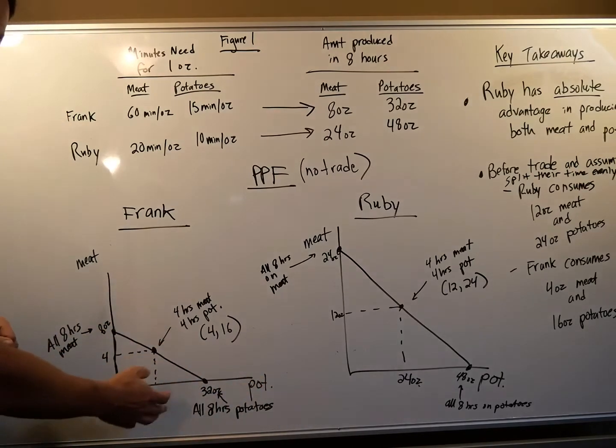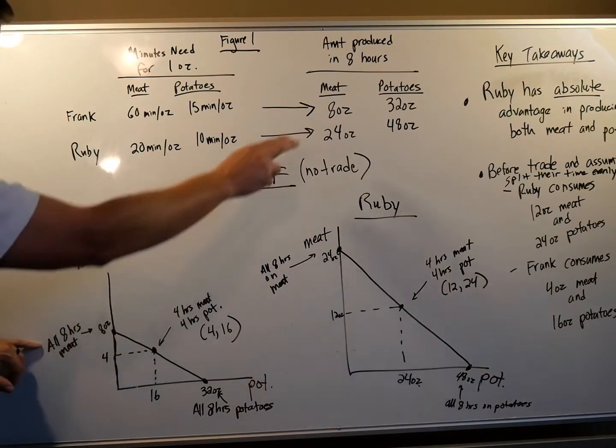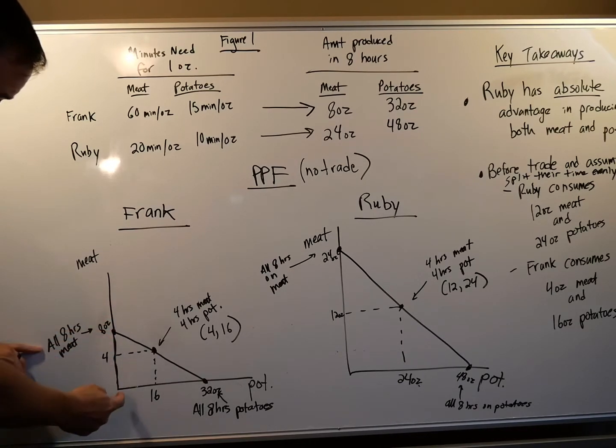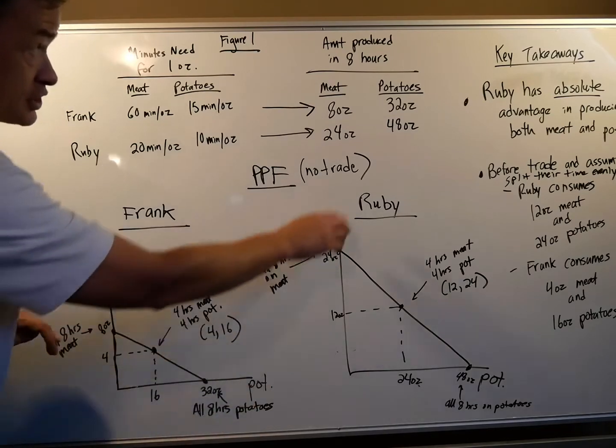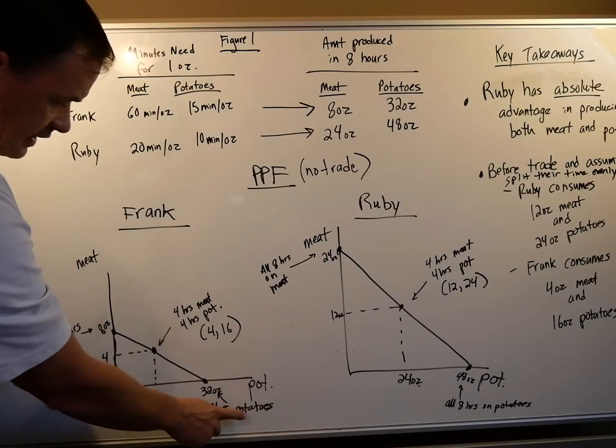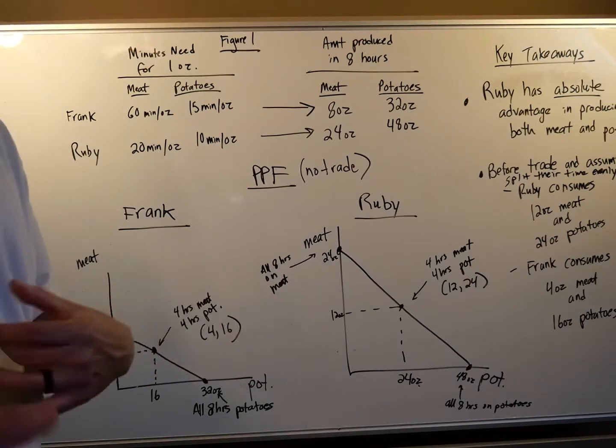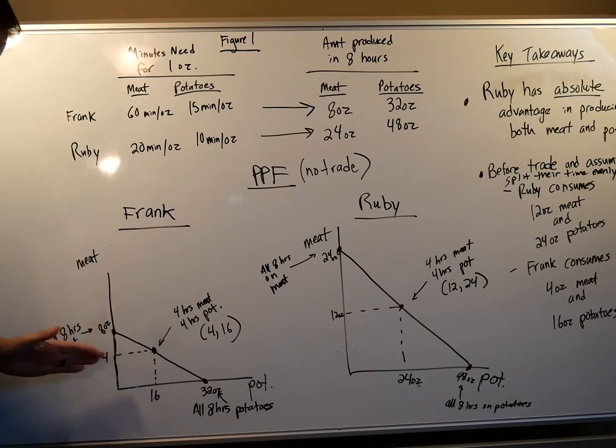So let's look at Frank. If he works all eight hours making meat, he'd be at eight ounces. And that's what that dot right there represents. You see eight ounces. So that's up here. And that's zero potatoes because we're right here on the horizontal. Now, if he made all potatoes for eight ounces, he can make 32 ounces, which checks out with our calculations over here. So 32 ounces, if he gets all eight hours on potatoes.